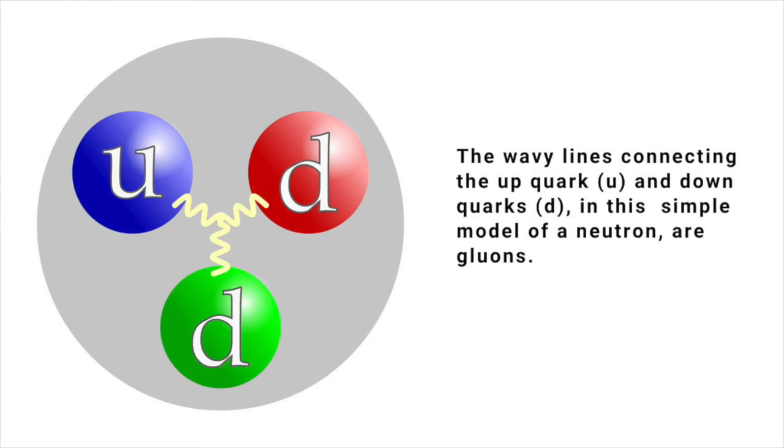Neither quarks nor gluons exist as isolated particles but only as constituents of hadrons. The as-yet-undetected graviton, presumed to be associated with the gravitational force, is theorized to have spin 2.